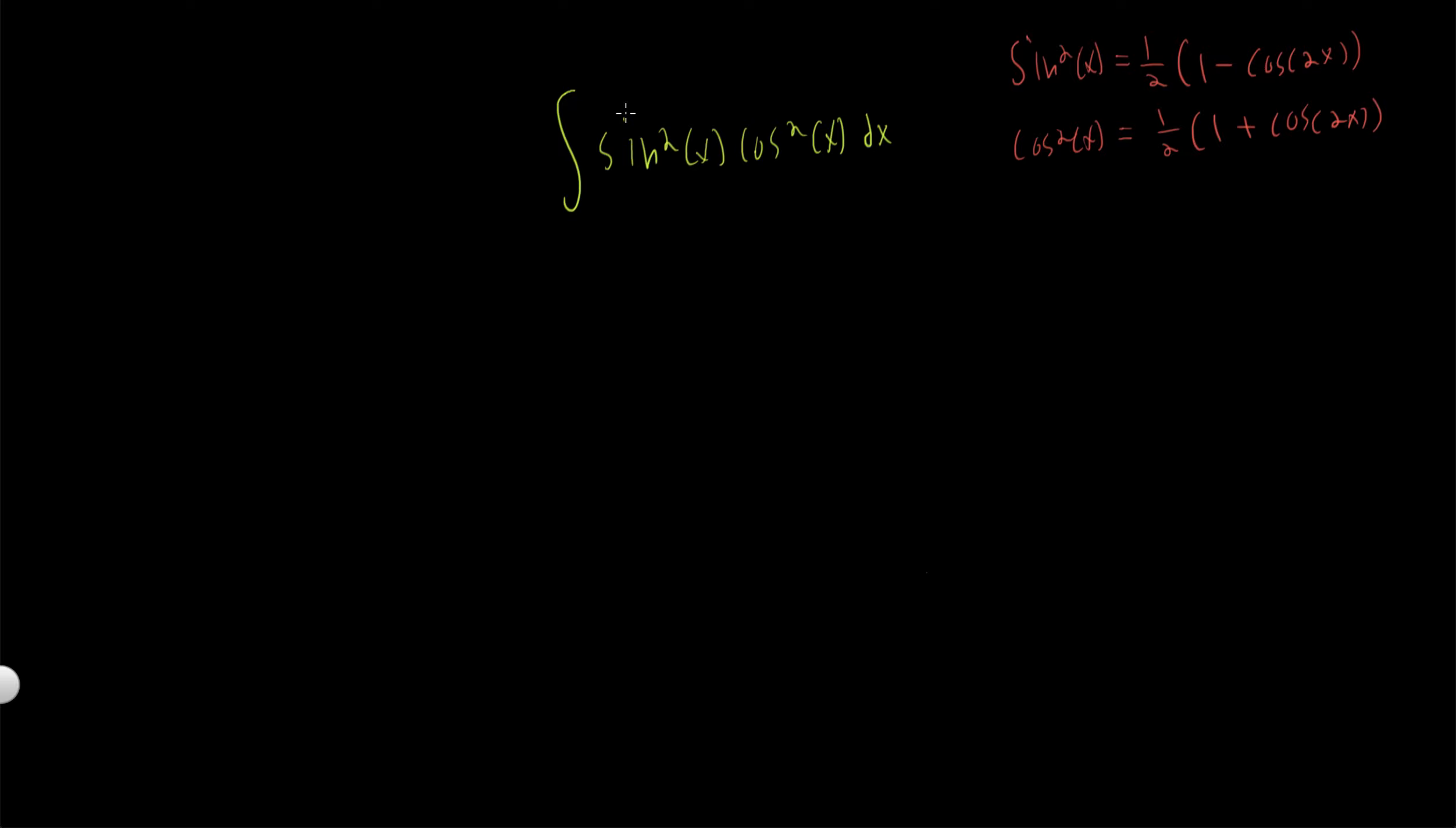We're going to use these two to figure this out. So we know that this is equal to, substituting those values, the integral of one-half times one minus cosine of 2x all times one-half times one plus cosine of 2x dx.